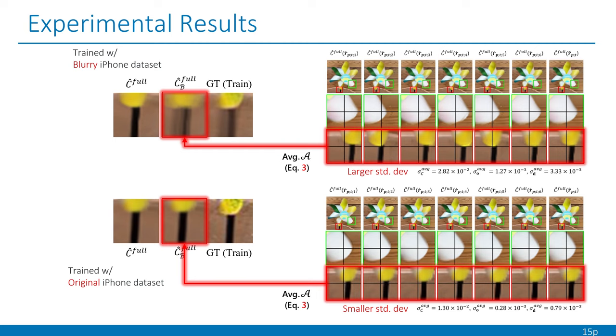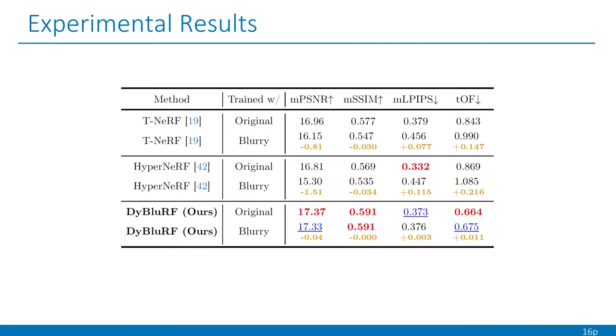Specifically, DyBluRF predicts diverse latent sharp rays with large standard deviation when trained with the blurry iPhone dataset whereas it predicts consistent latent sharp rays with smaller standard deviation with the original iPhone dataset. Thanks to this adaptive optimization capacity, DyBluRF maintains consistent results between the two datasets across all metrics, demonstrating its robustness to different degrees of blurriness.